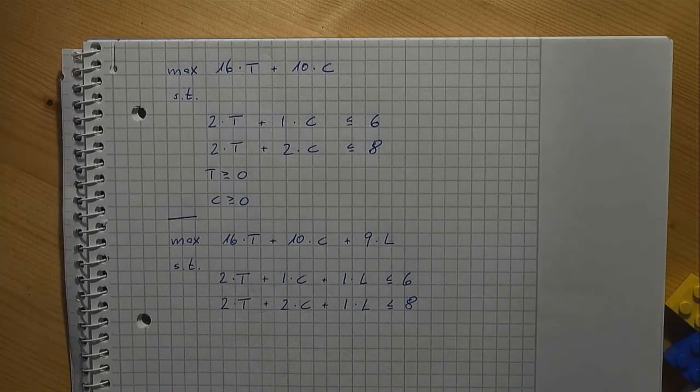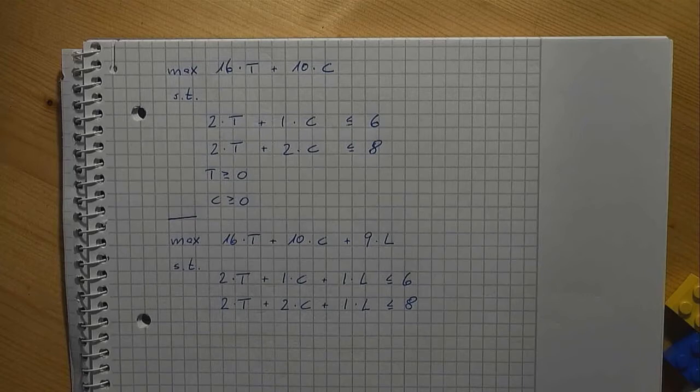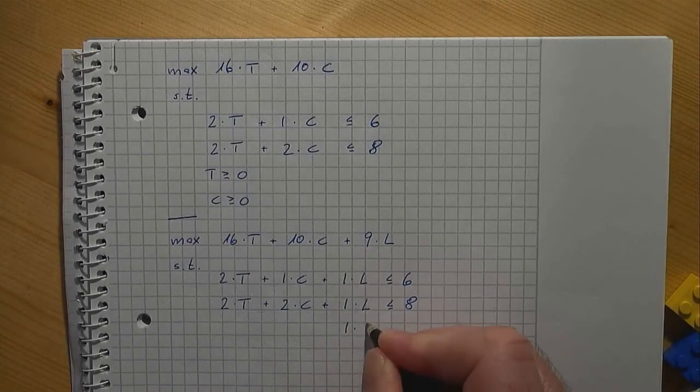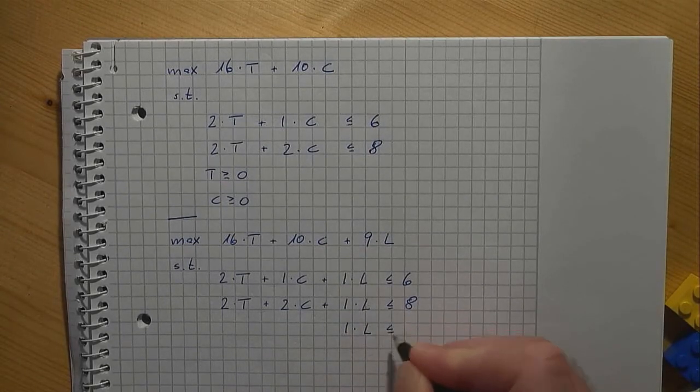And finally, we have a new part, the 2x6. Since the number of 2x6s is limited, we now need a capacity constraint for this part too. Note that this part is not needed for tables and chairs, but for the loungers. 1 times L is less than or equal to 4.